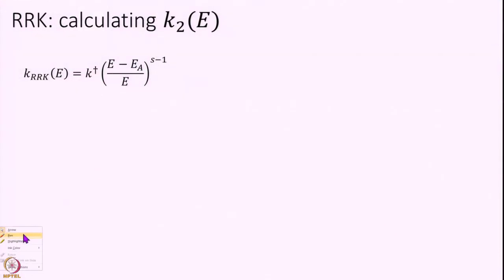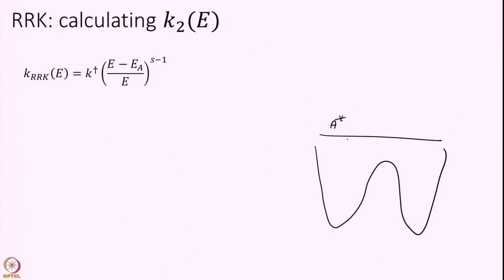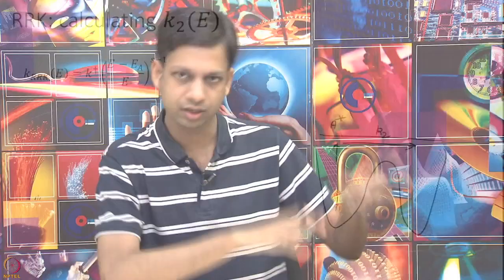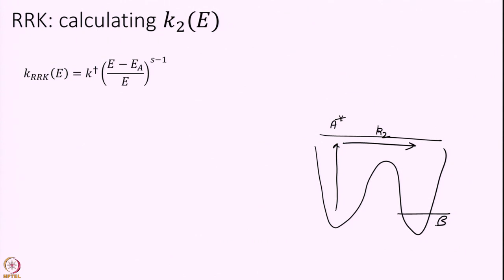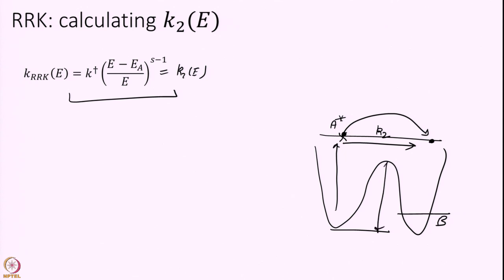We have already solved for K2 of E. Once more: what is K2 of E? If this is A*, K2 is the rate going from A* reactant to B product at that given energy. Within the RRK model we calculated this a few modules ago and showed that this is given by: K2(E) = K† × (1 − EA/E)^(S−1), where E is the total energy, EA is the barrier height, and S is the number of oscillators. So, one constant down — K2 of E.